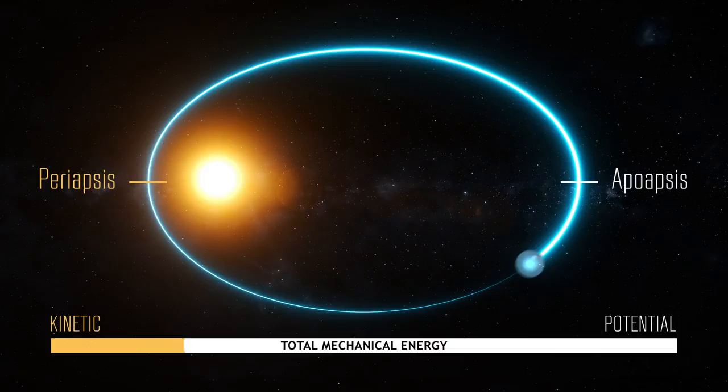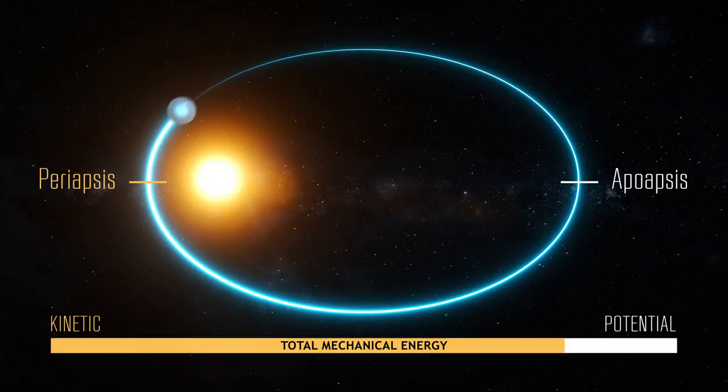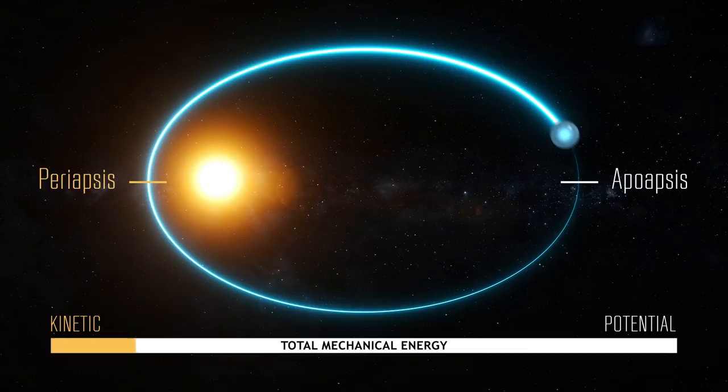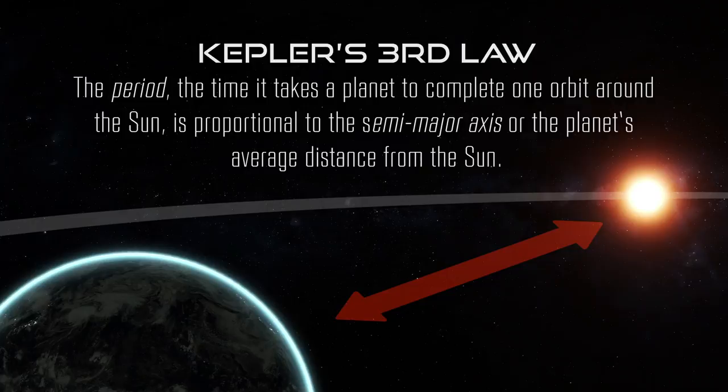When the planet is closest to the sun, or periapsis, kinetic energy of the orbit is at its maximum, and potential energy is at its minimum. At apoapsis, when the planet is furthest from the sun, the orbit's kinetic energy is minimized, and the potential energy is at its max. This conservation of energy is a key concept that is emphasized in other educational aids.